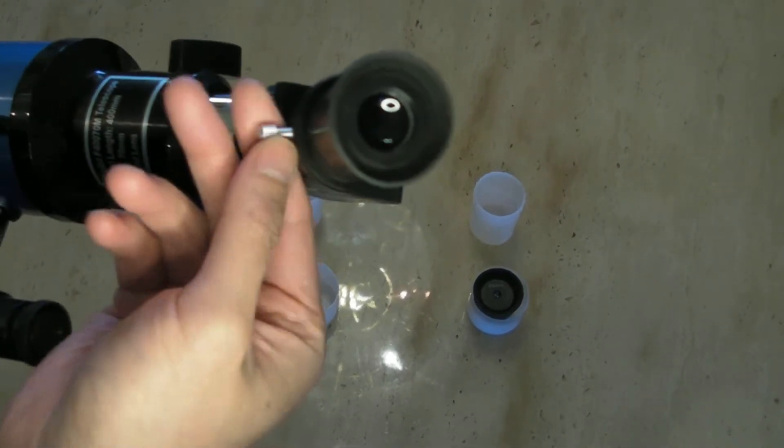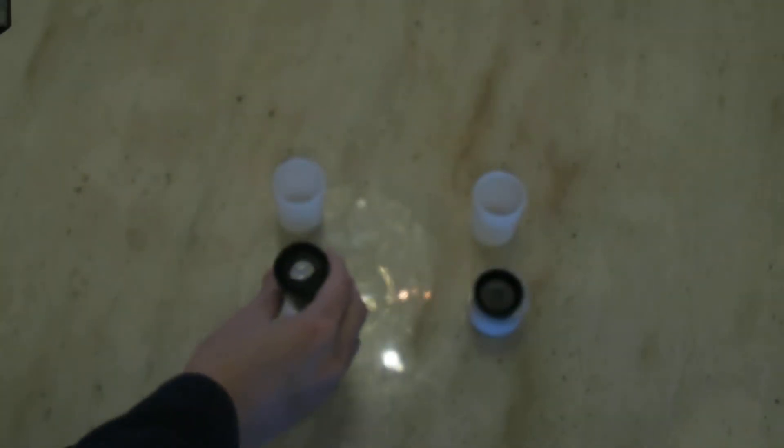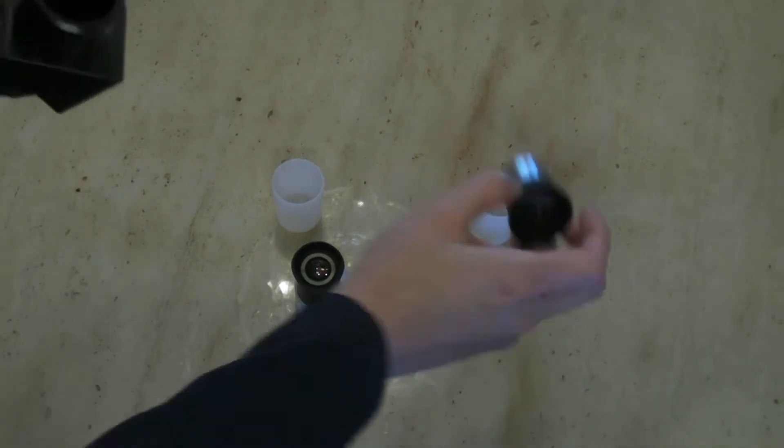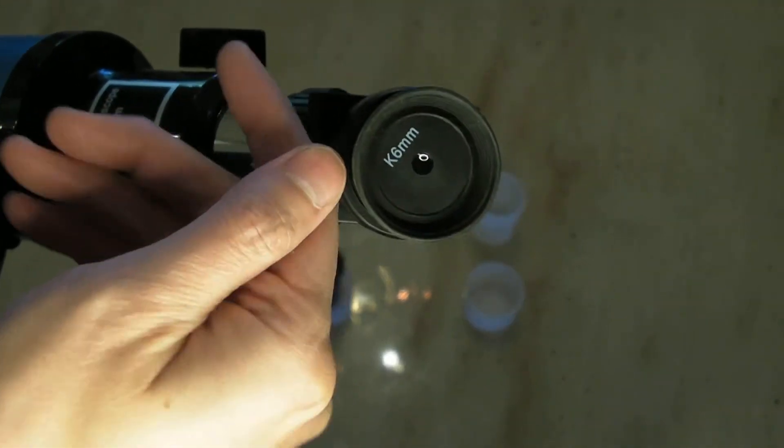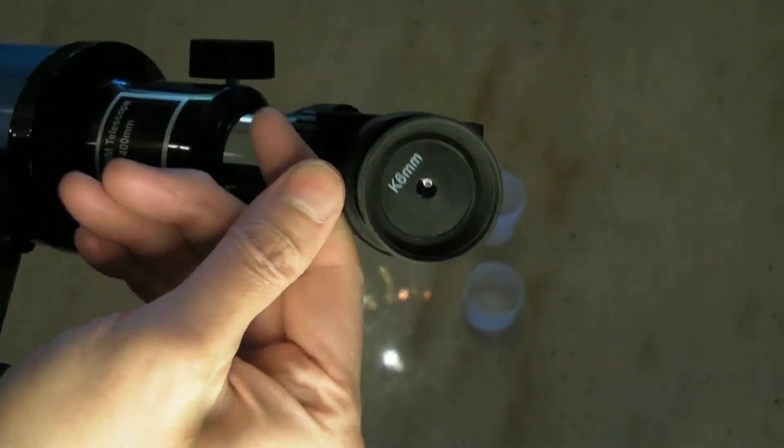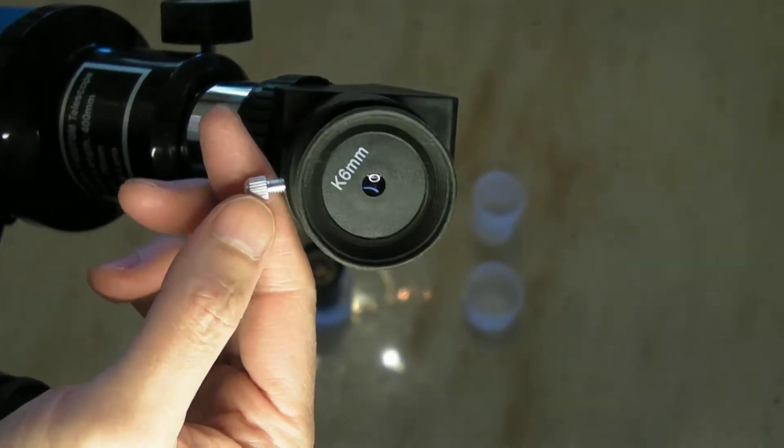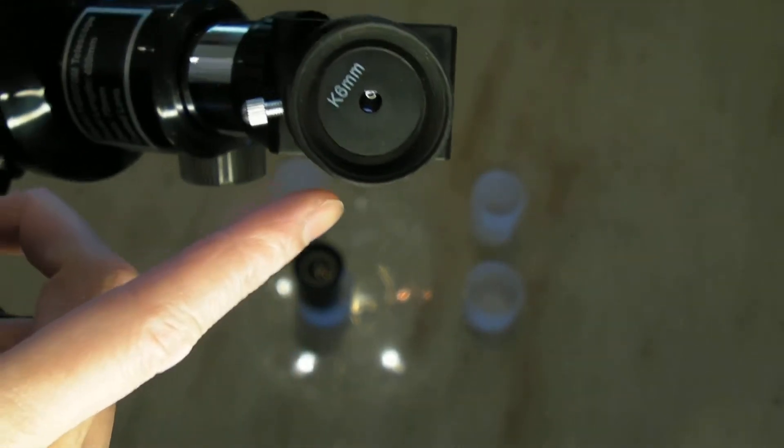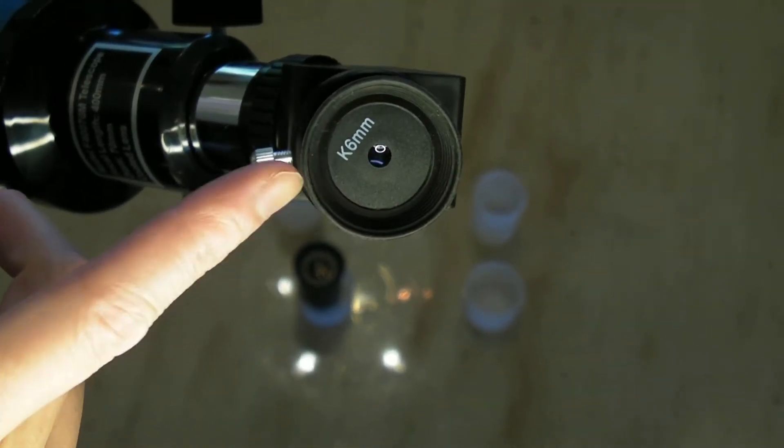And if you want to change out your other eyepiece, just pop out your first one and tighten it up. So the 6mm allows you to see the object a lot closer than the 25mm.